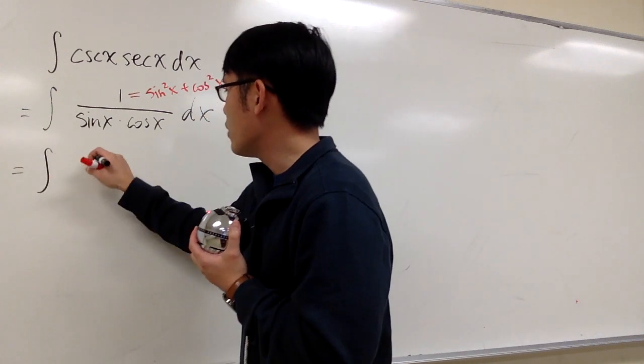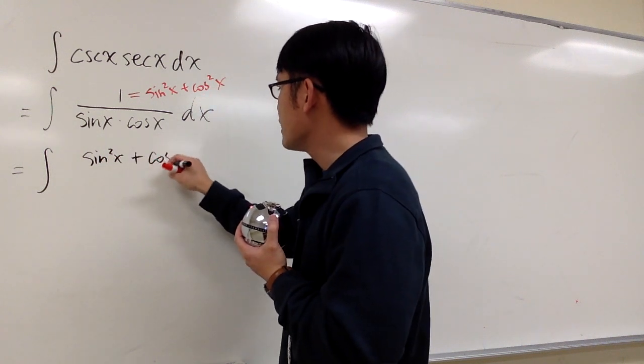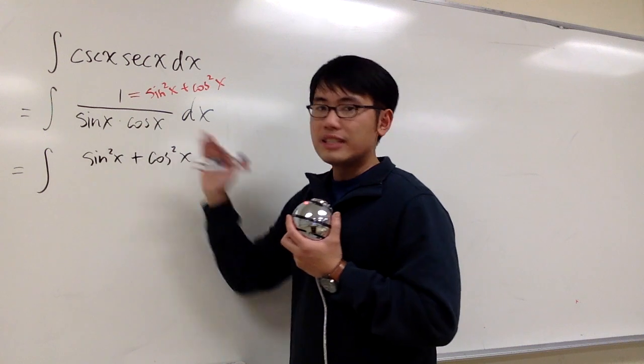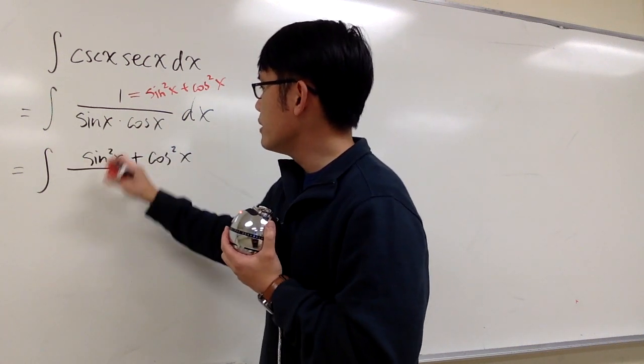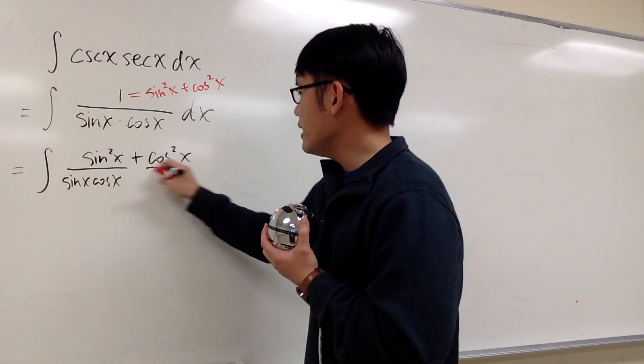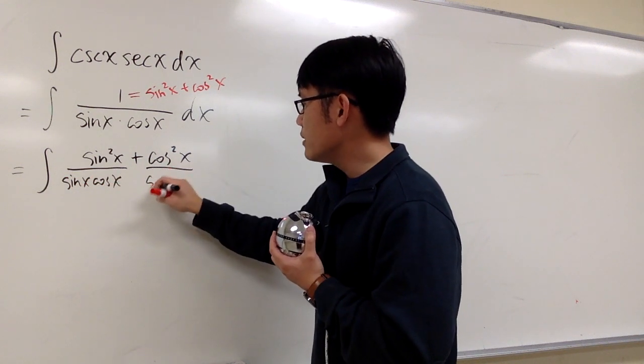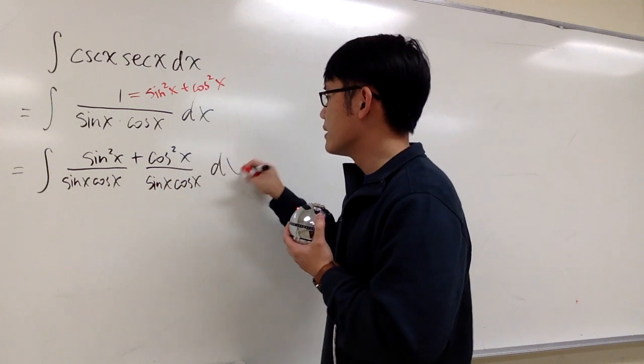So let's do that. So in other words, this is the same as the integral of sine square x on the top, plus cosine square x on the top. And then because they share the same denominator, let me just break them apart already. So this right here is over sine x times cosine x. And then for the second part, it's also with the same denominator, sine x times cosine x, like that.